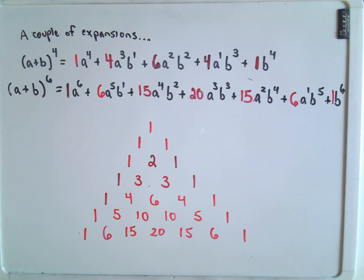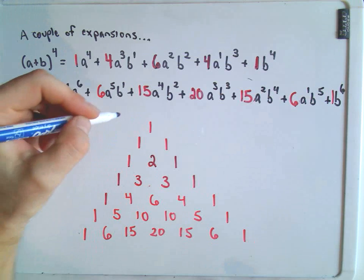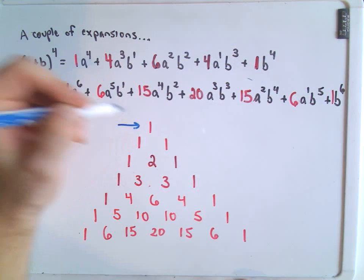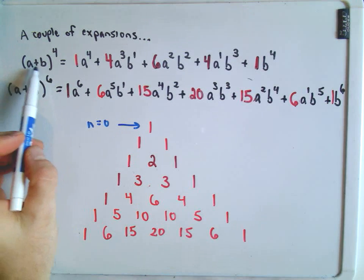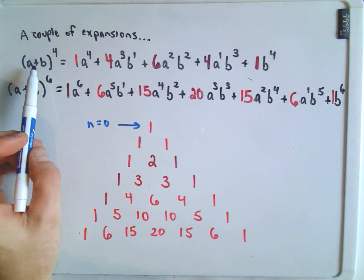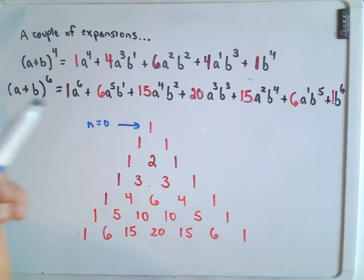So the idea is the first row is going to correspond to the exponent of 0. So imagine if you had a plus b to the 0 power. Well, you would just get 1 would be the coefficient.